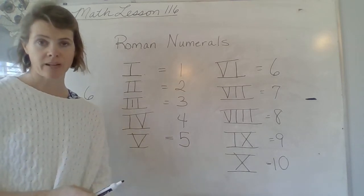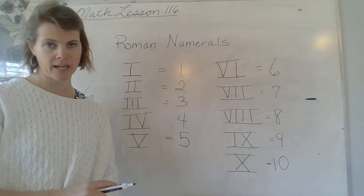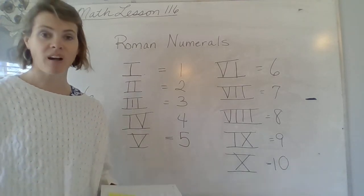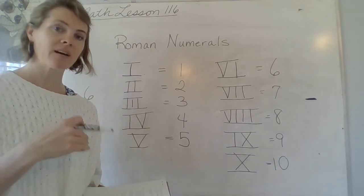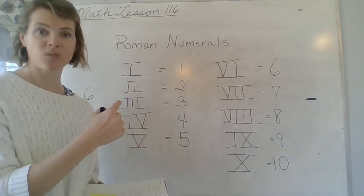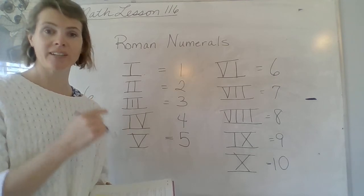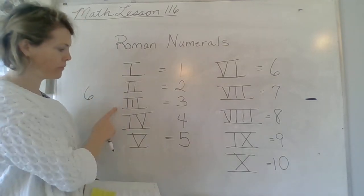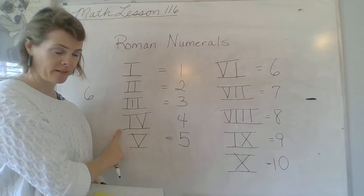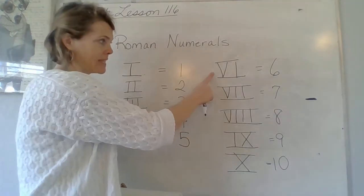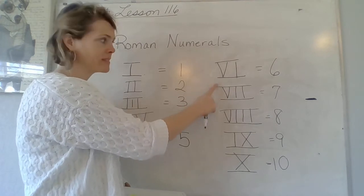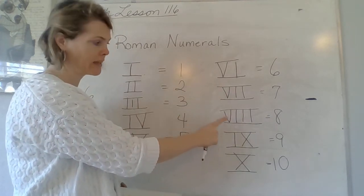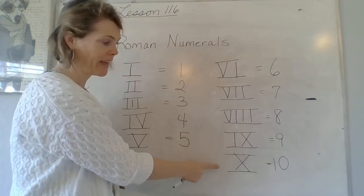This is something you're going to need to memorize. And we're going to be practicing one through ten over and over and over every day until it's just solid. It's super easy for us. Because everything that comes after this builds on these first ten numbers. So we've got to memorize these ten really well. One, two, three, four, which is five minus one, five. Six, which is five plus one. Seven, five plus two. Eight, five plus three. Nine, ten minus one. And ten.